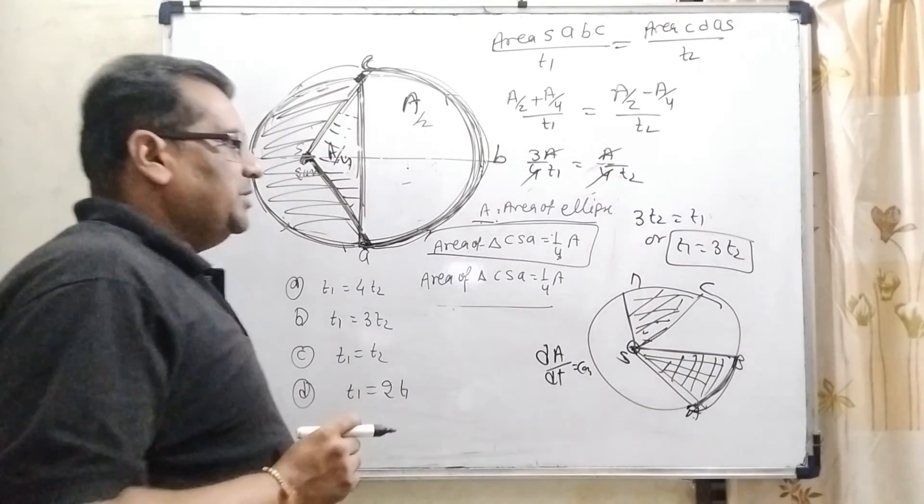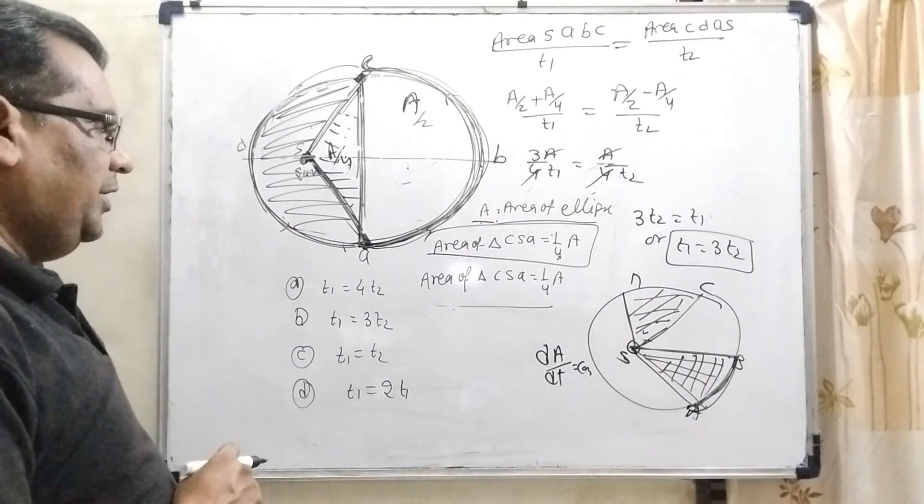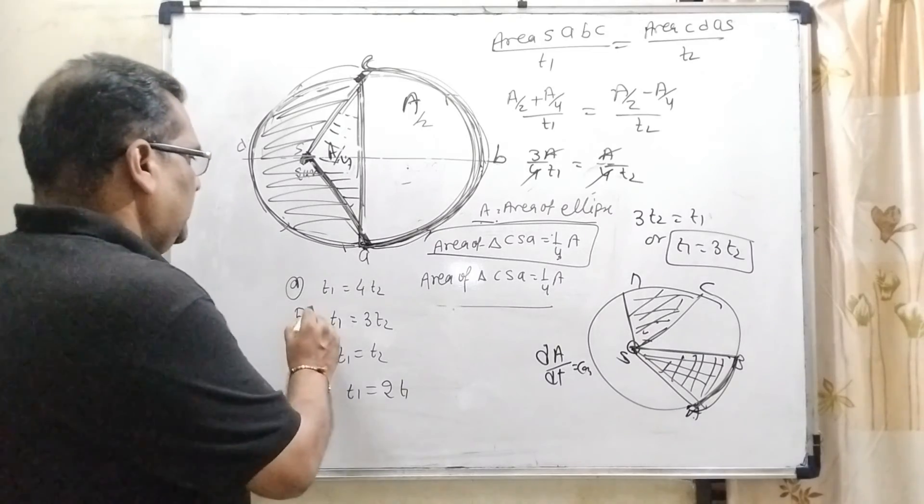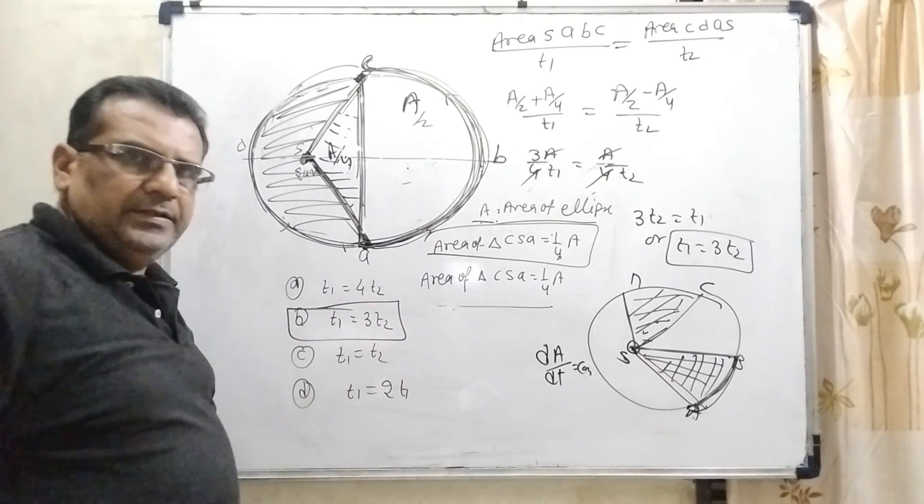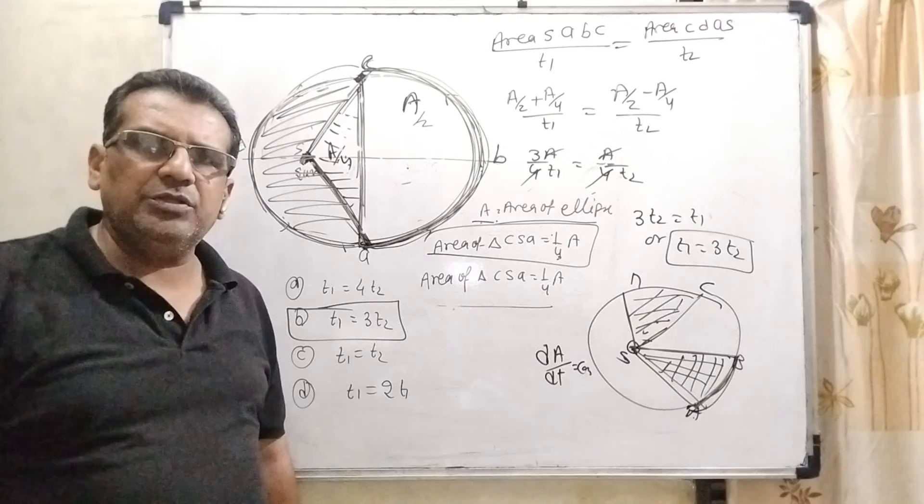So, let us see which option is matched here. Here T1 equal to 3T2. Yes, option B is correct. I hope you understood this question.